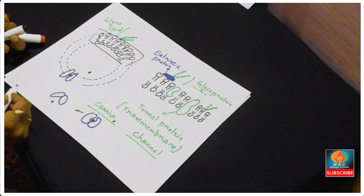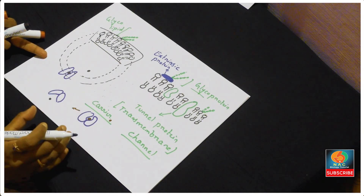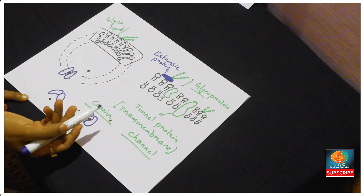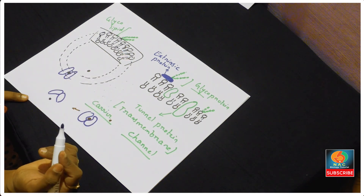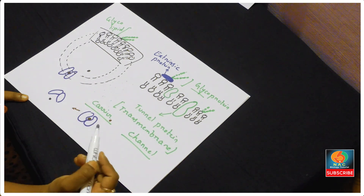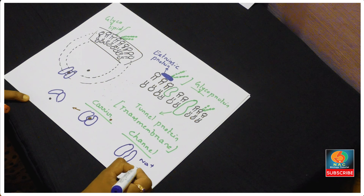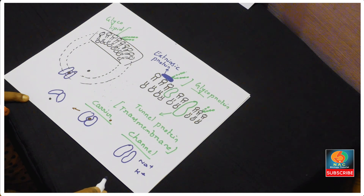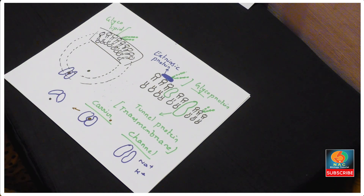I will do a separate video explaining in detail how material is transferred inside or outside the membrane through active transport or passive transport. Channel proteins act as ion-gated channels, helpful for the movement of sodium and potassium ions inside and outside the membrane based on the concentration gradient. That is the entire structure and function of the plasma membrane. Thank you for watching.